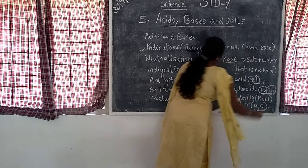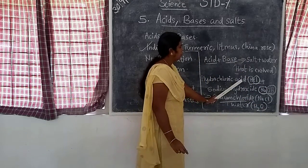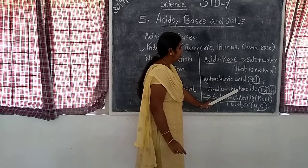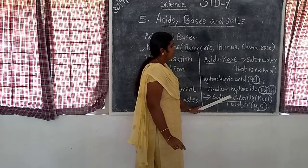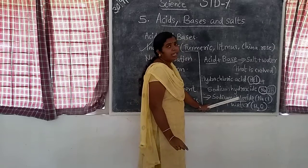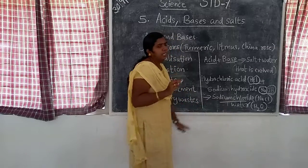HCl plus NaOH gives sodium chloride plus water.